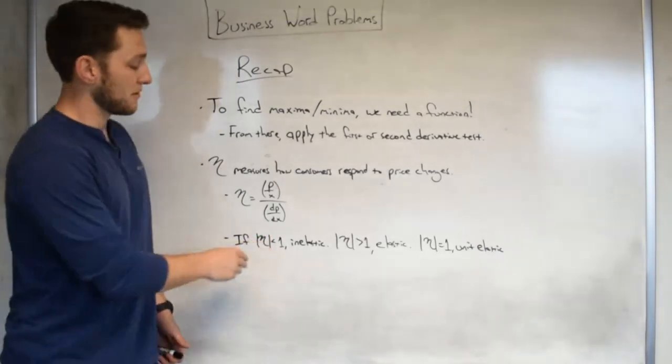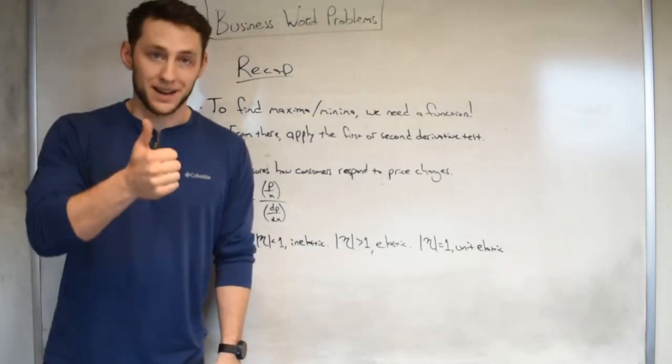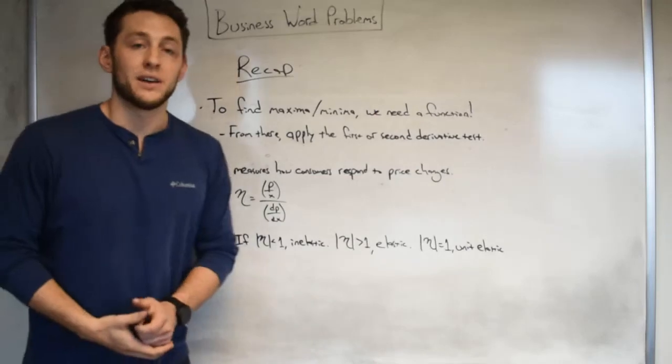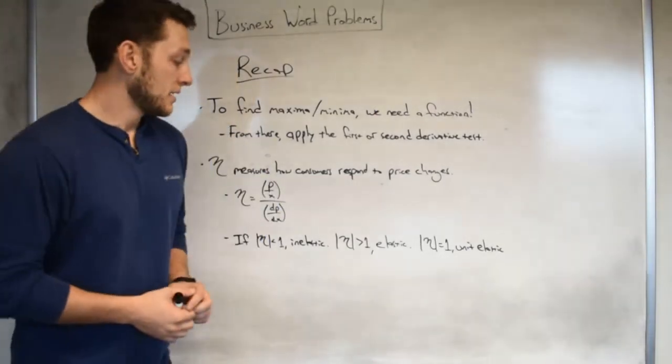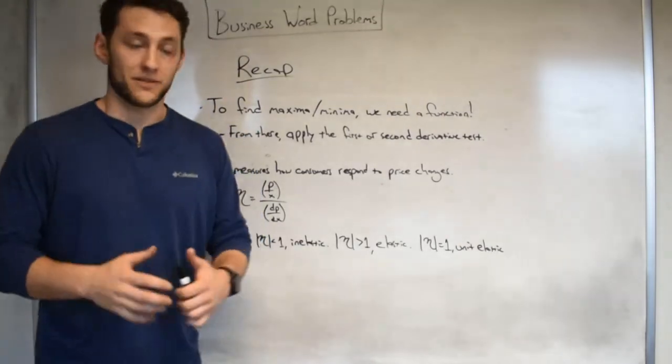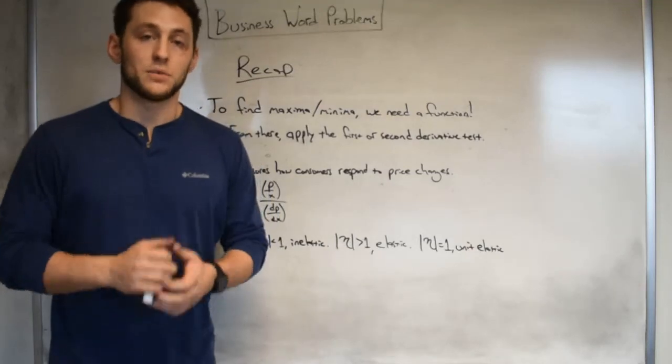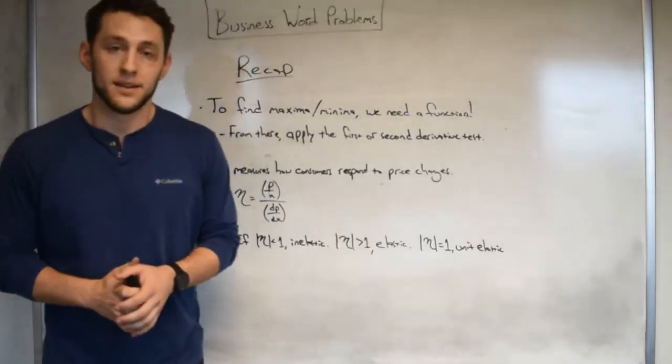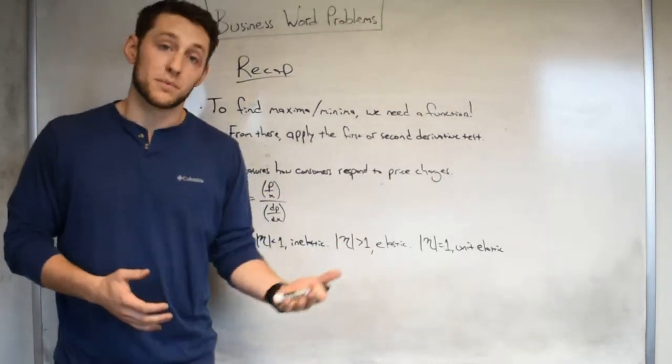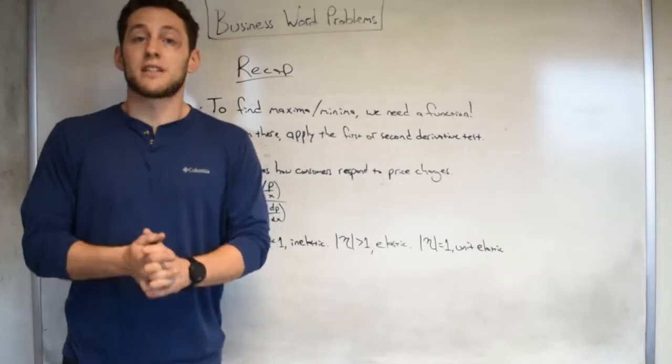Lastly, if we were to interpret eta, if eta, the absolute value, was less than 1, we called the market inelastic. This meant an increase in price led to an increase in revenue. If the absolute value of eta was greater than 1, the market was elastic. If you raise the price, you're going to lose money, lose your revenue. Lastly, if eta was equal to 1, the absolute value, we called that unit elastic. That meant that if you increase price, the revenue actually stays the same. You lose some customers, but you make up the money with that price increase.